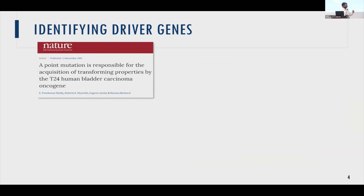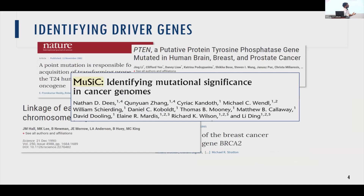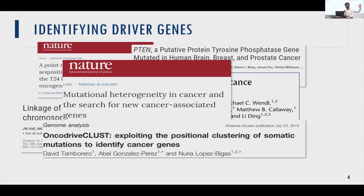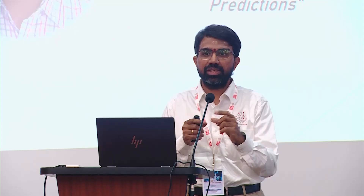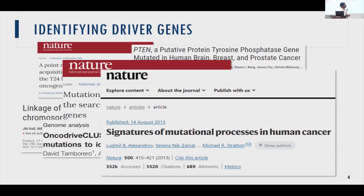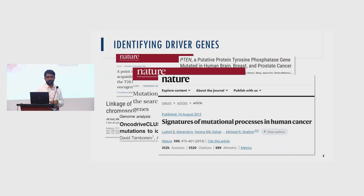There are many studies in this space — here's a quick overview of some very popular tools that people use to study mutations in cancer genomes, ranging from single gene studies to computational studies that capture various aspects of cancer genomes. There's also a very classic paper that talks about the signature of mutational processes in human cancer.